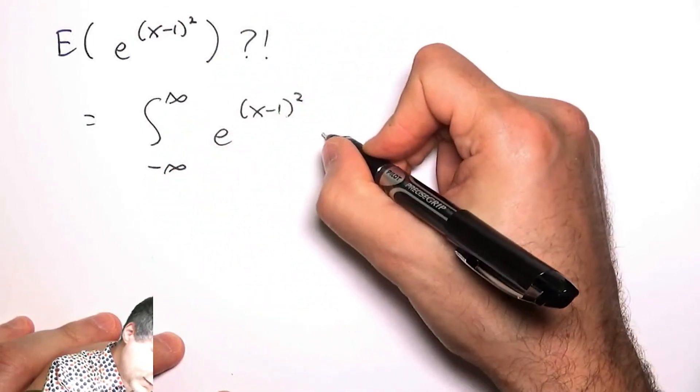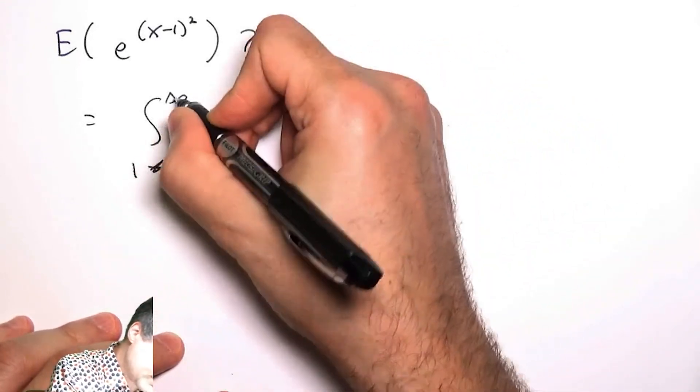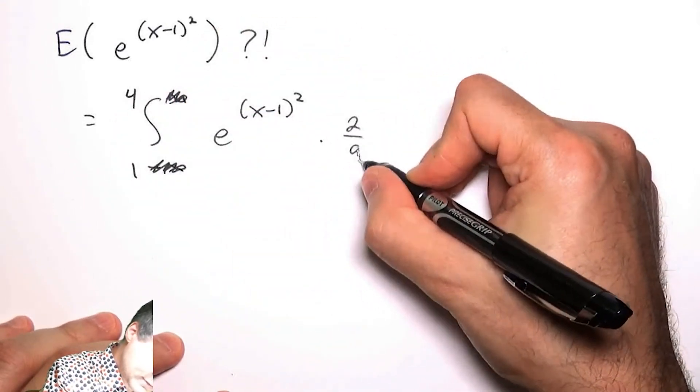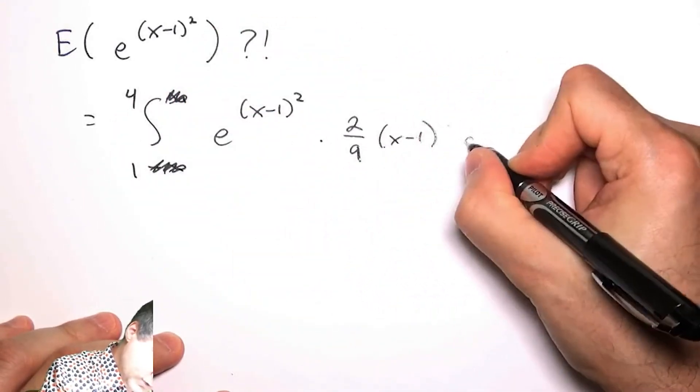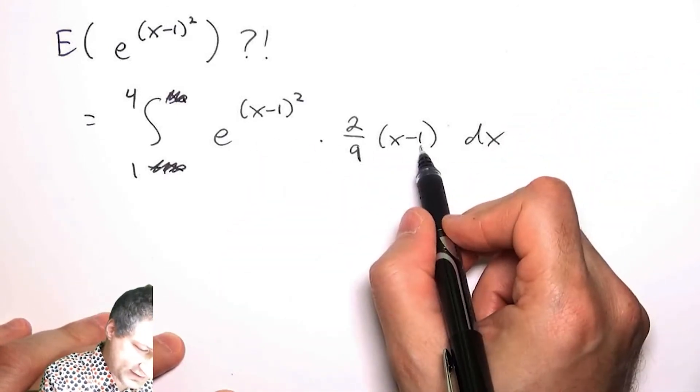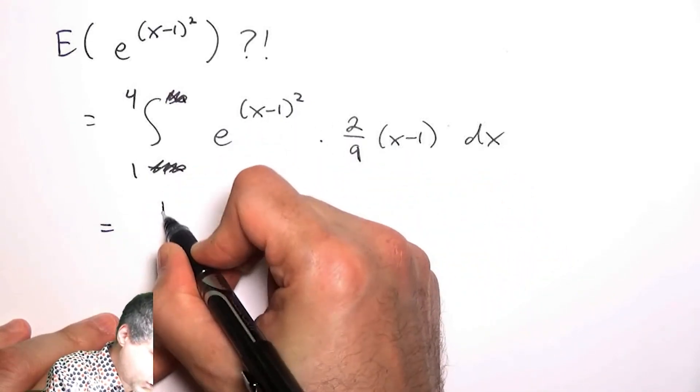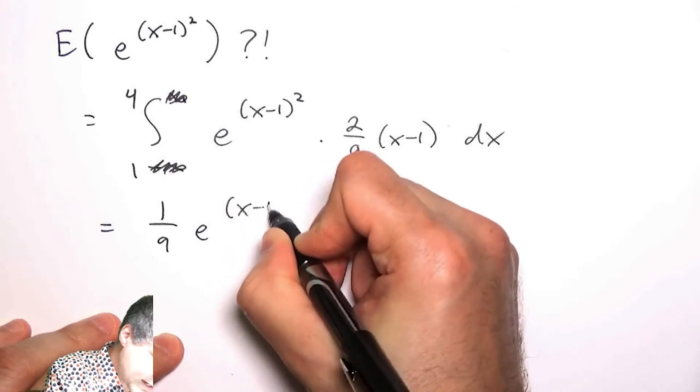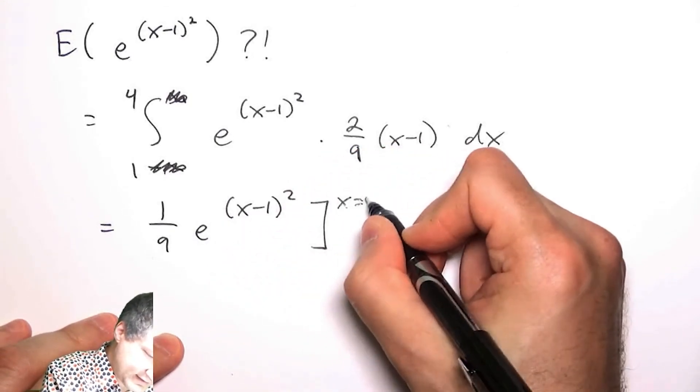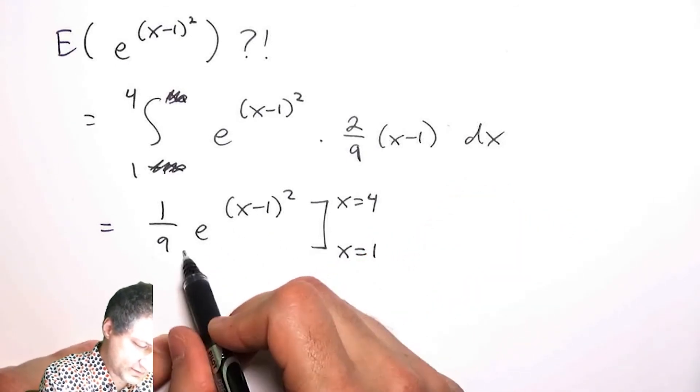and then I take the PDF, which is 2/9(x-1)dx from 1 to 4. Now I say, 'Oh, actually this worked out okay,' because 2(x-1) is exactly what I need to take the derivative here. This is just going to be 1/9 e^(x-1)², evaluated at x=4 to x=1. You should be able to convince yourself that if I take the derivative of this, I get exactly this thing up here.